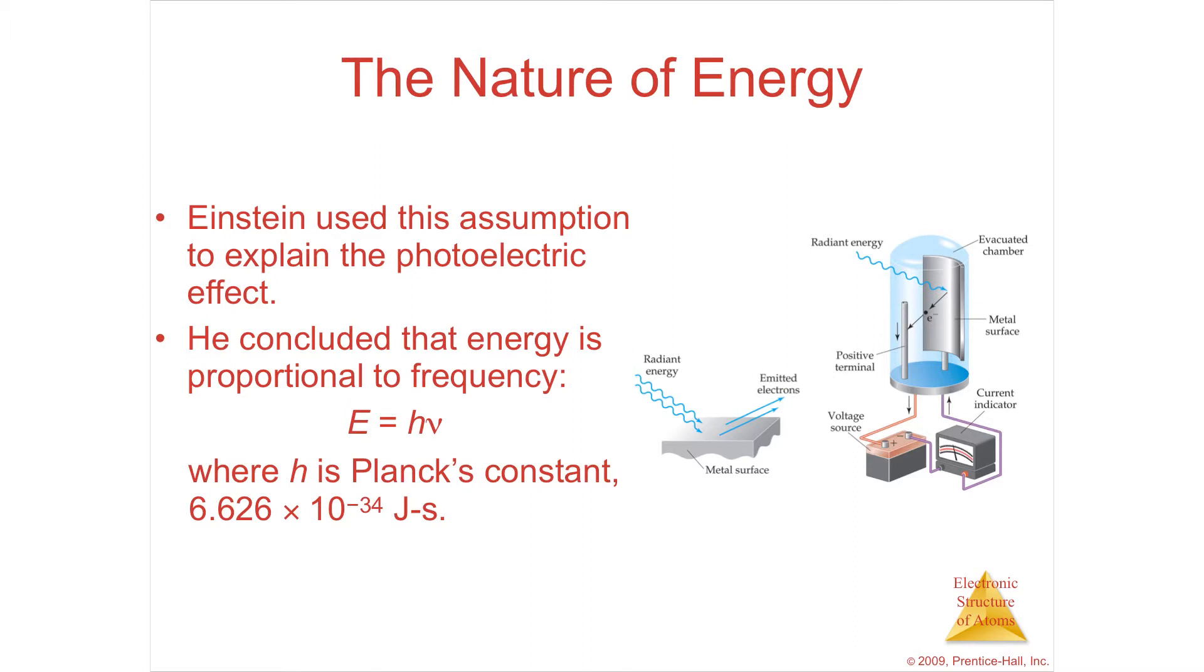So he used Max Planck's constant, h nu, and he said that if you had sufficient energy, it would start spitting out electrons, and then if you increase the intensity, you increase the amplitude of that light energy, it will spit out even more.